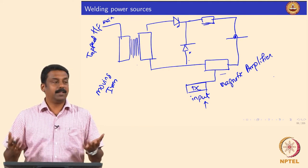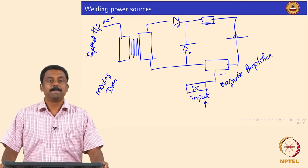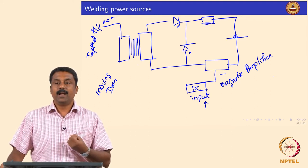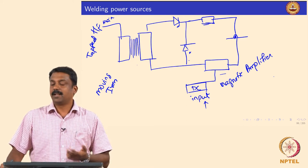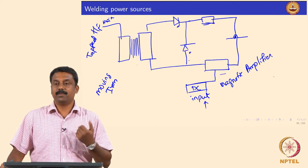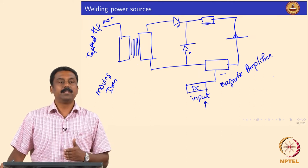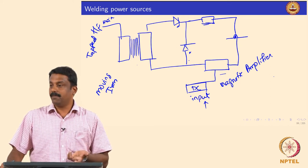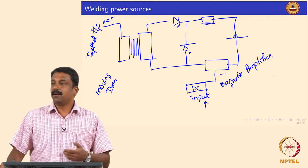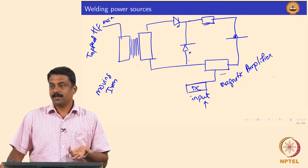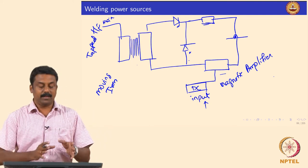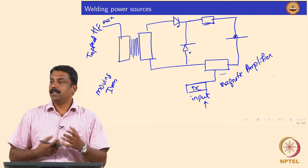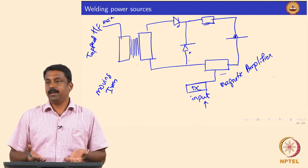Thanks to the invention of semiconductors, transistors, and diode-based rectifiers, a lot of development has happened in welding power sources. Semiconductors were introduced into power sources so that control and feedback can be achieved. Modern power sources moved from conventional transformer, rectifier, inductor-based systems into semiconductor-based and diode-based rectifiers, as well as transistor-based waveform regulators. Power source manufacturers started using advancements in the semiconductor industry to make better power sources.